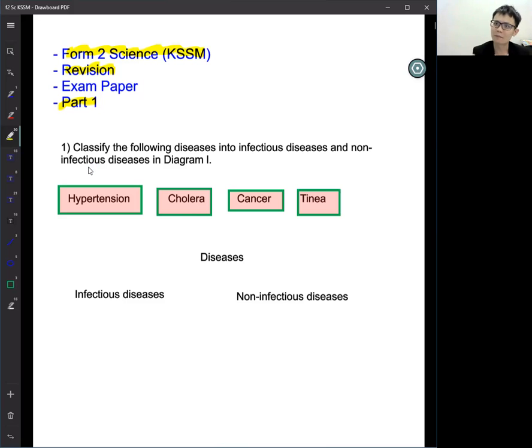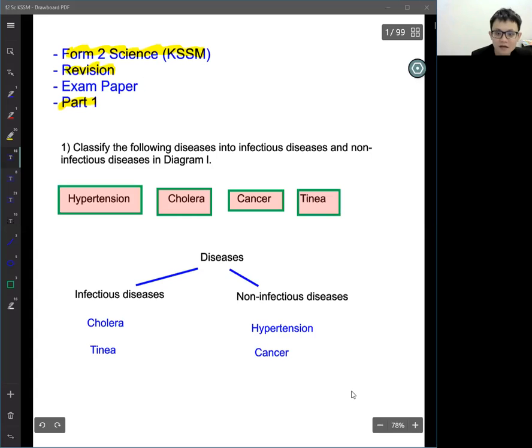So what is the answer for this question? Diseases for infectious disease and non-infectious disease. So the answer will be cholera and tinea for infectious disease, and non-infectious disease will be cancer and hypertension.